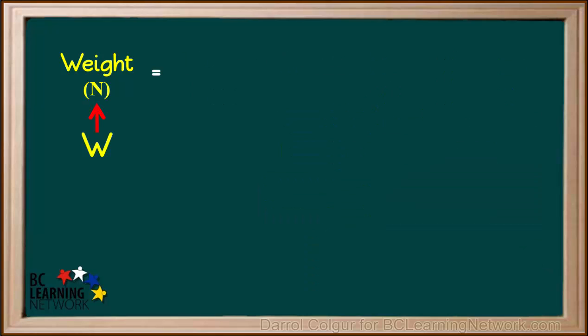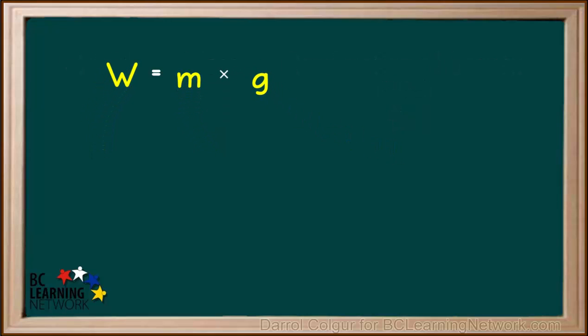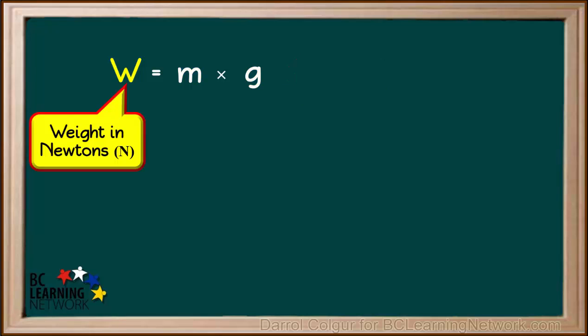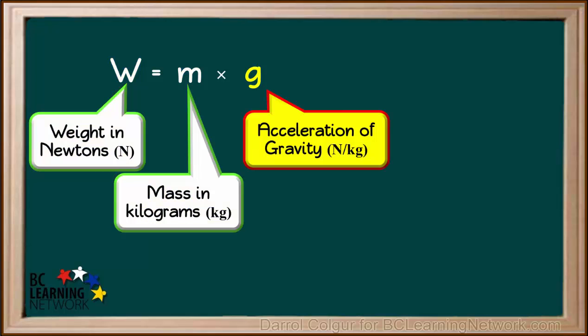We can use a capital W to stand for weight, a lowercase m to stand for mass, and a lowercase g to stand for acceleration of gravity. So now, we can just use these letters to give us an abbreviated form of this equation. The equation is W equals m times g, where W stands for the weight in newtons, m stands for the mass in kilograms, and g stands for the acceleration of gravity in newtons per kilogram.